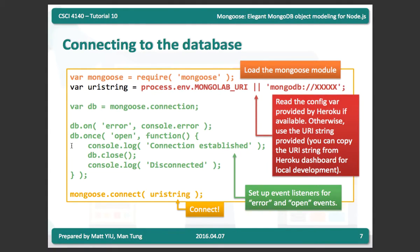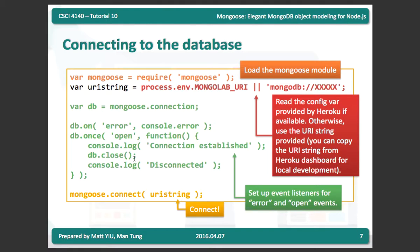You also need to set up event handlers. There are two main handlers: the error handler — when the connection has a problem, you handle the error, for example by printing it out — and the open handler, triggered when the connection is okay, where you can do your work. After setting up the event handlers, you call mongoose.connect with your URI string to connect to MongoDB.